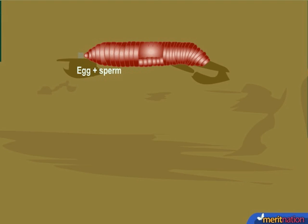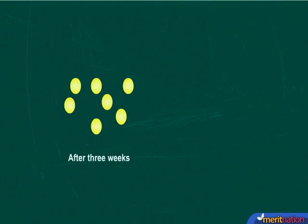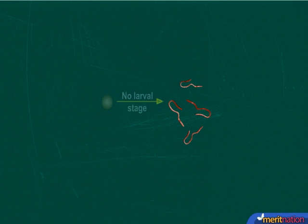The cocoon finally slips off the worm's head. Fertilization and embryo development takes place within the cocoon. After about three weeks, each cocoon produces an average of four baby worms. There is no larval form, so we can say that the development is direct.